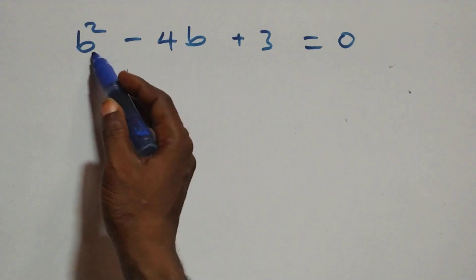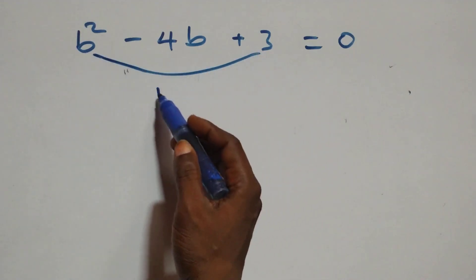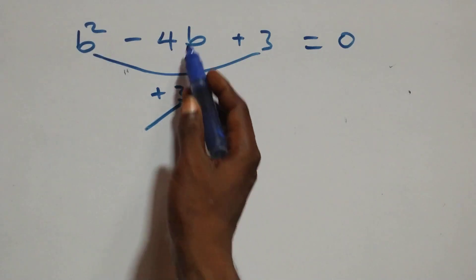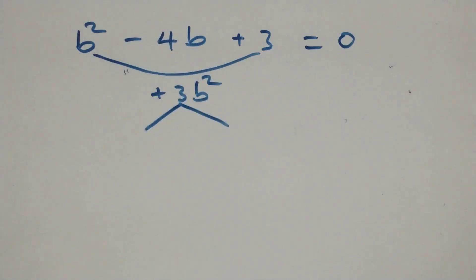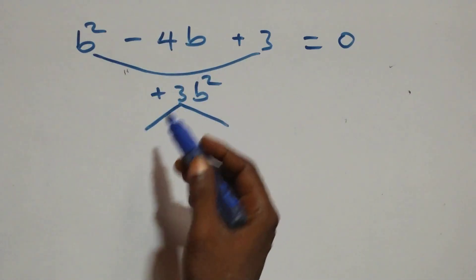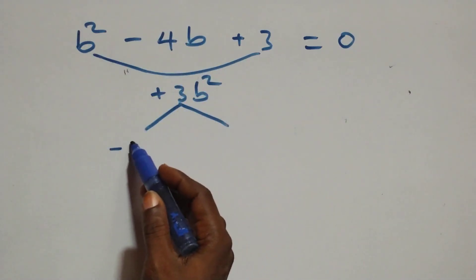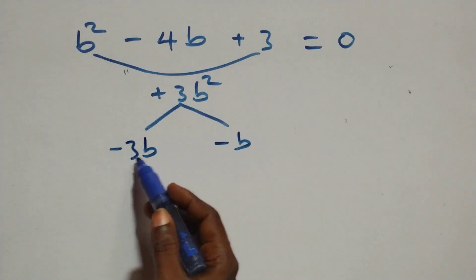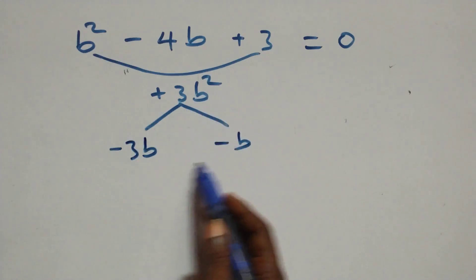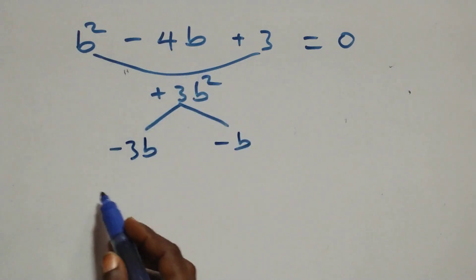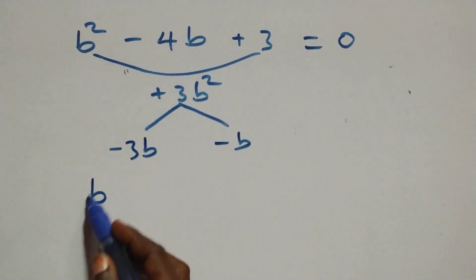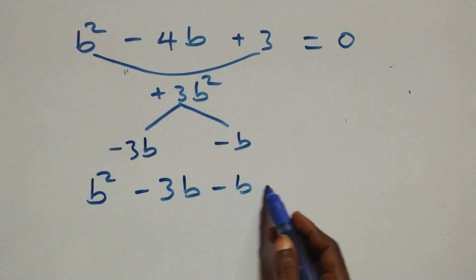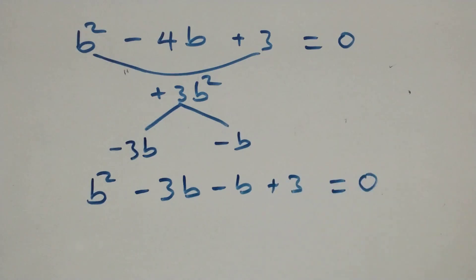To factor b² minus 4b plus 3 equals 0, we need two numbers that multiply to give +3 and sum to give minus 4. That gives minus 3b and minus b. So the equation becomes b² minus 3b minus b plus 3 equals 0.